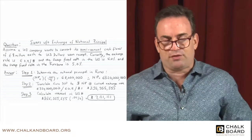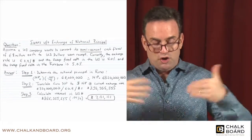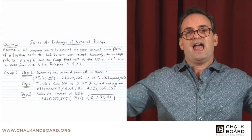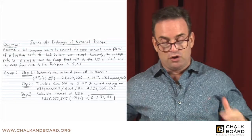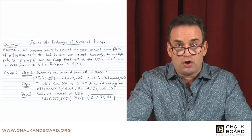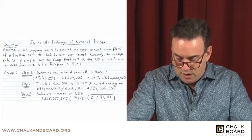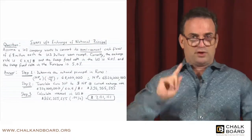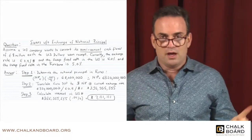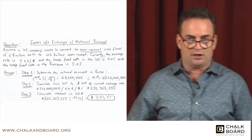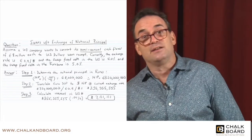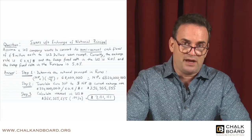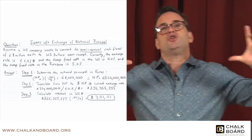Now that I have the 320 million euros as the notional principal, I want to convert to dollars. I take the 320 million euros and divide by the exchange rate of 0.9 euros per dollar. Note: you divide — not multiply — because multiplying would give you euros squared per dollar, which is meaningless. Dividing 320 million euros by 0.9 euros per dollar gives you 355,555,555 dollars as the dollar notional principal.